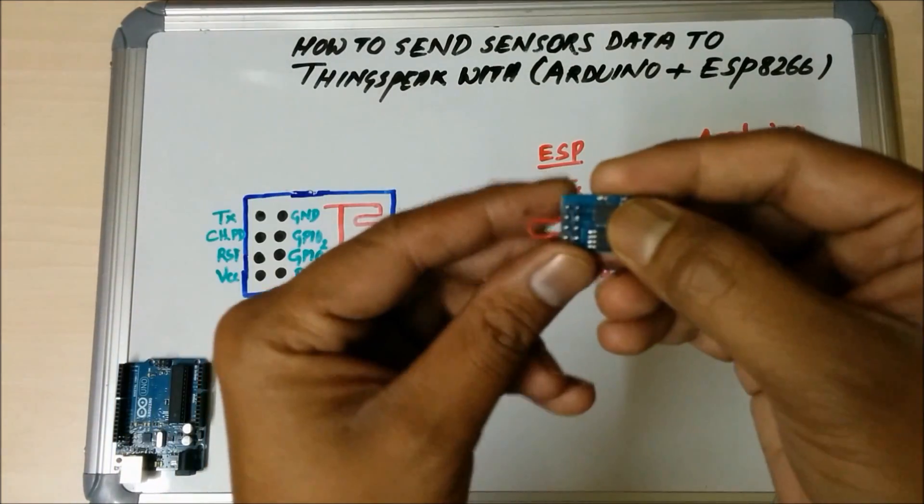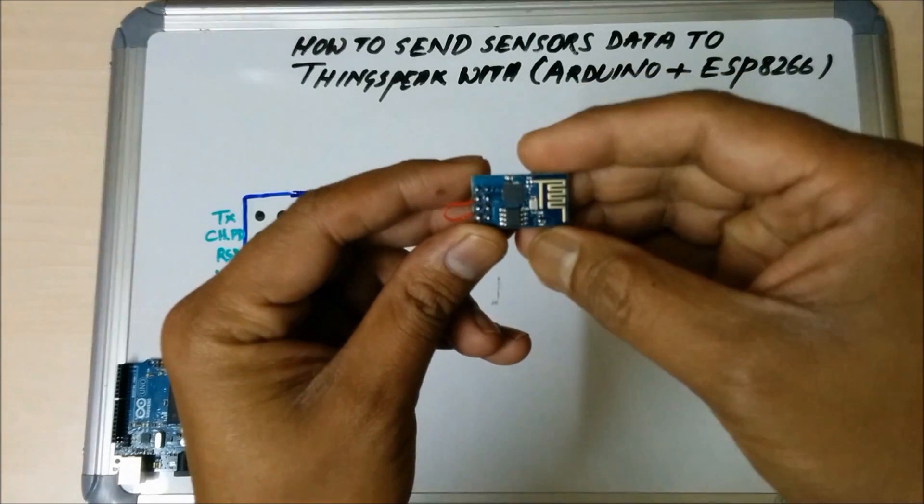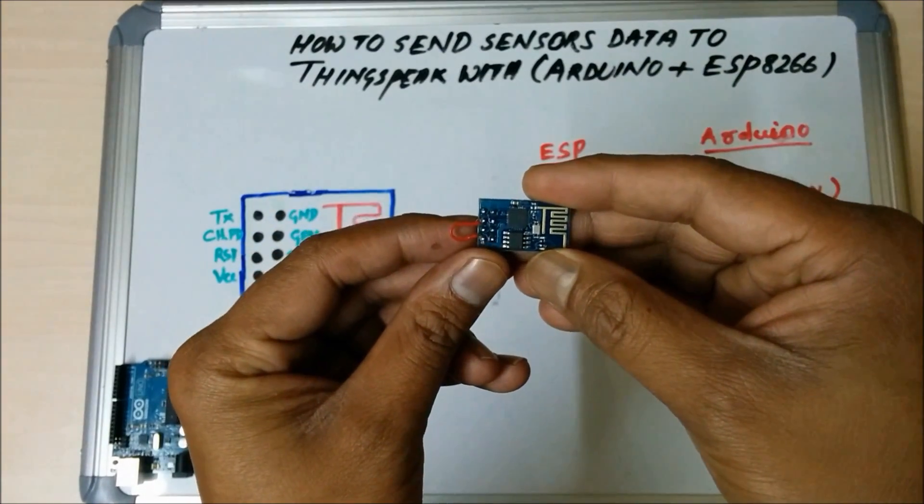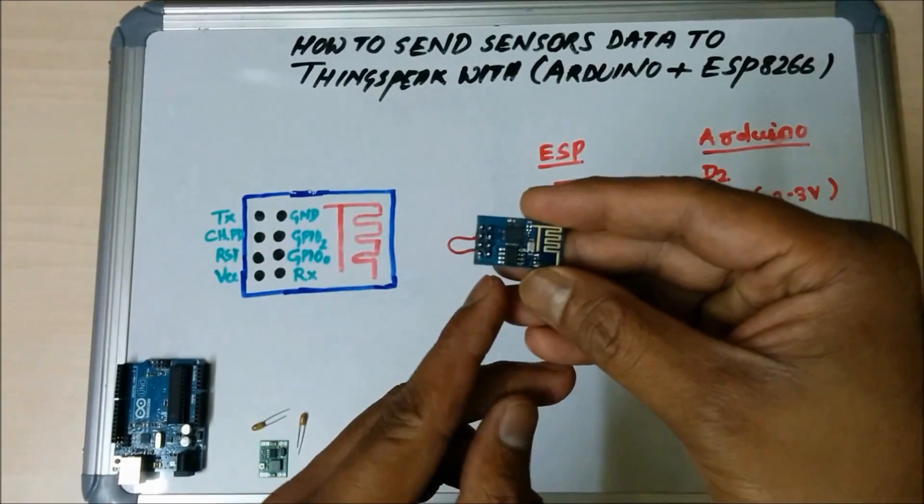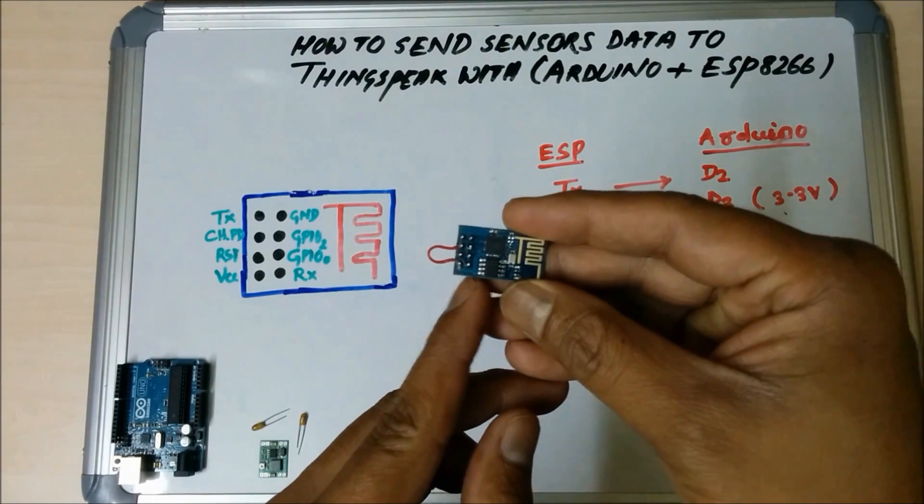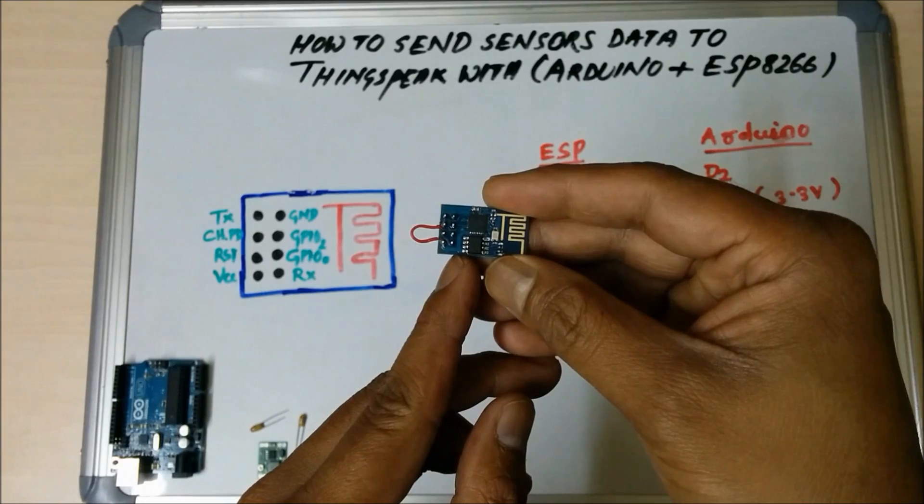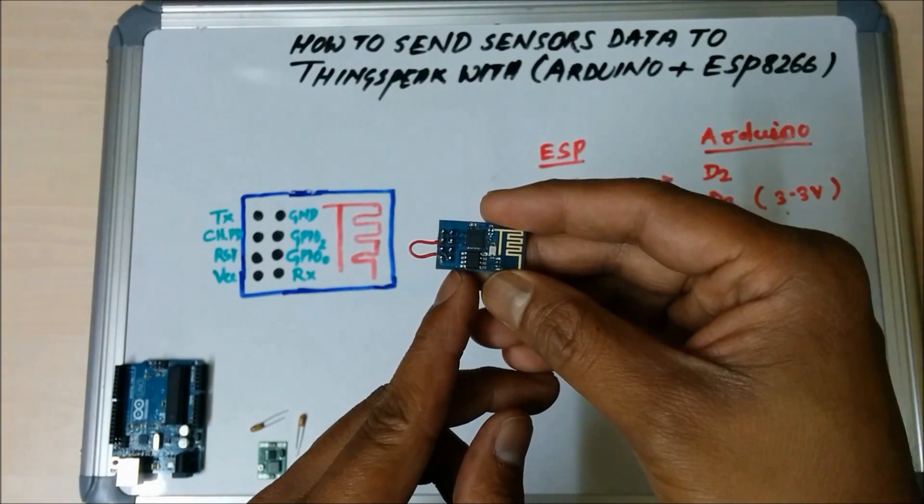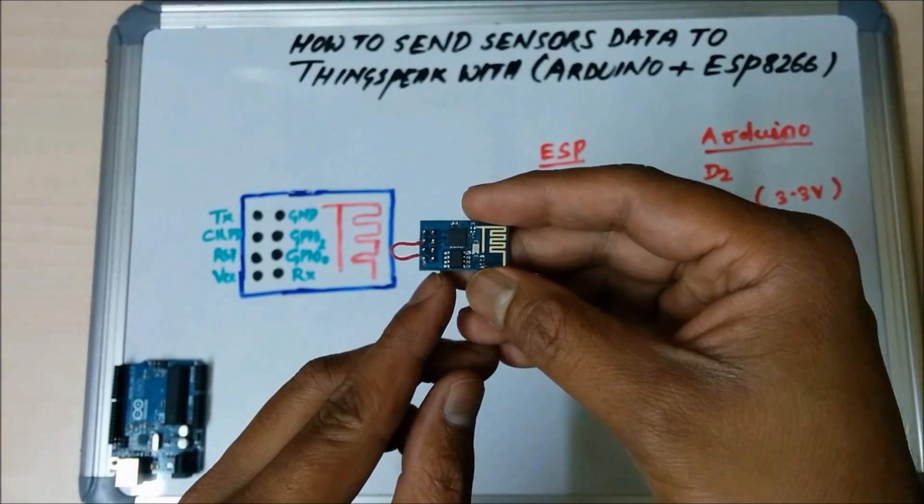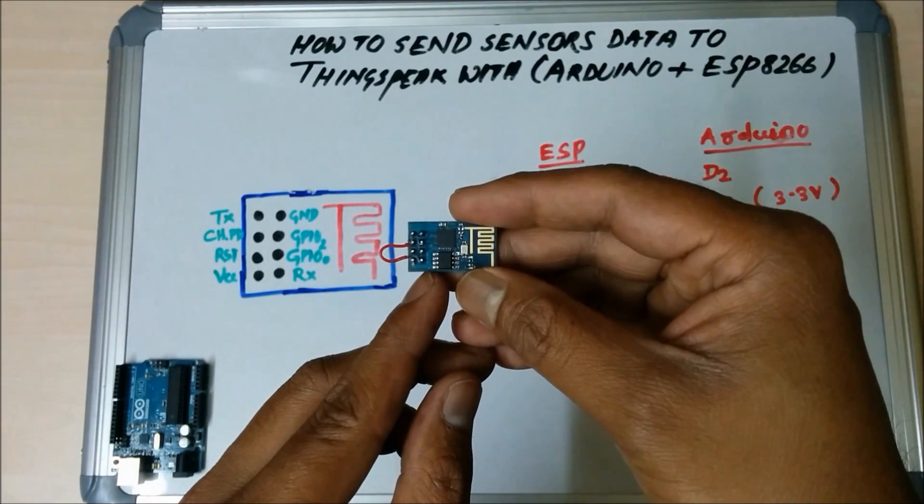The first row is TX and ground pin and the bottom row is VCC and RX pin. The remaining four pins are not necessary for our project, so I am just ignoring these four pins.